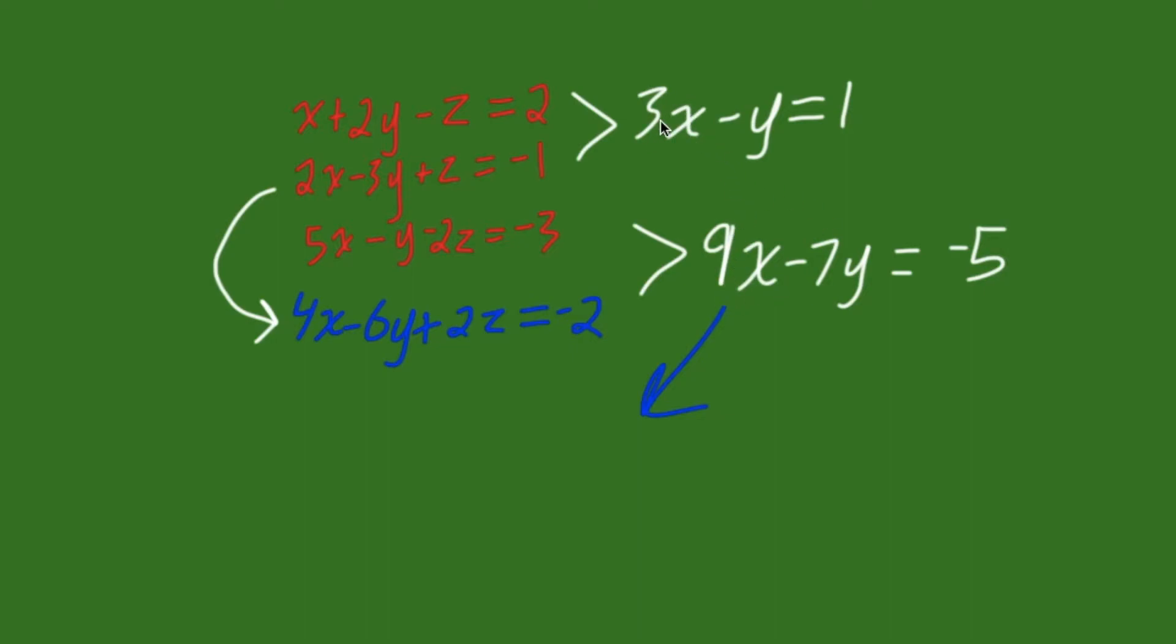So, let's choose to eliminate for x. Let's multiply this equation here by 3. So, we have two 9x's. So, if we multiply all of this equation by 3, we get 9x minus 3y equals 3. Now, if we subtract 1 from 2, the 9x will cancel out.